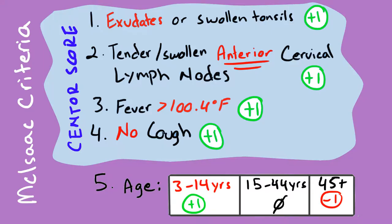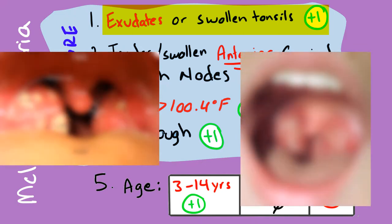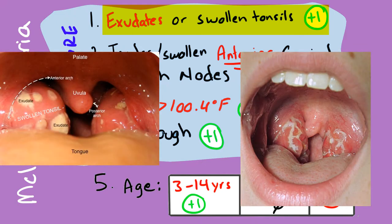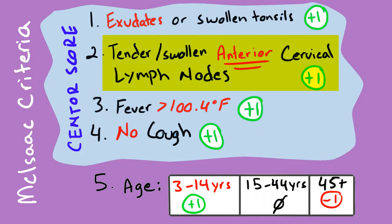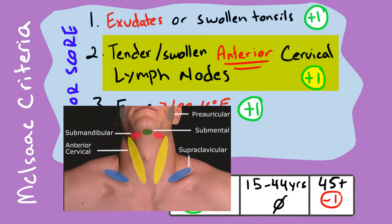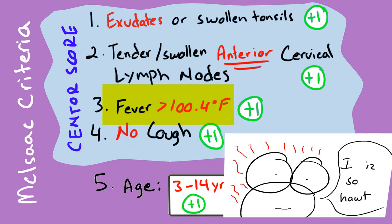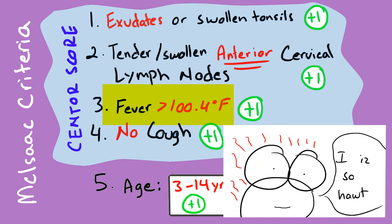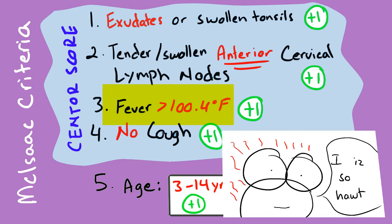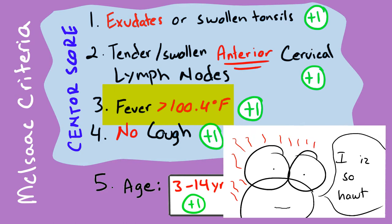The score consists of: exudates or swelling on the tonsils, where you may see white or yellow crust growing in the back of the throat; tender, swollen anterior cervical lymph nodes; and a fever, usually 100.4 or higher. If it's a low-grade fever, you probably want to think of a viral infection.